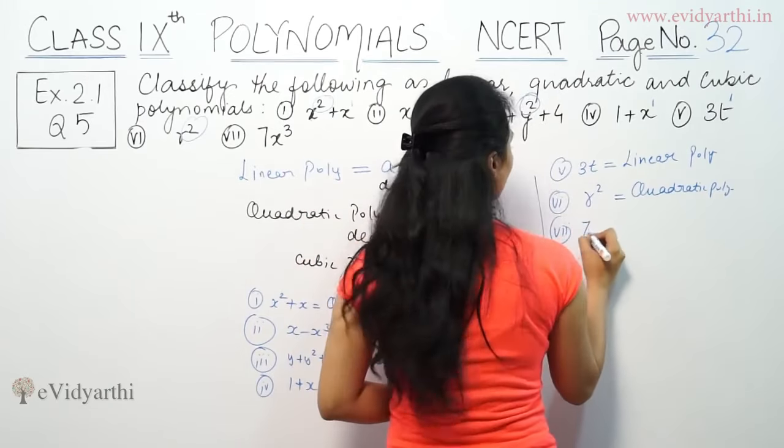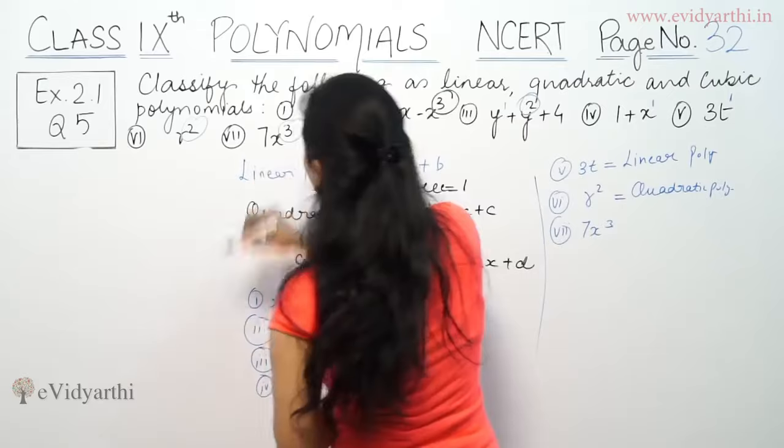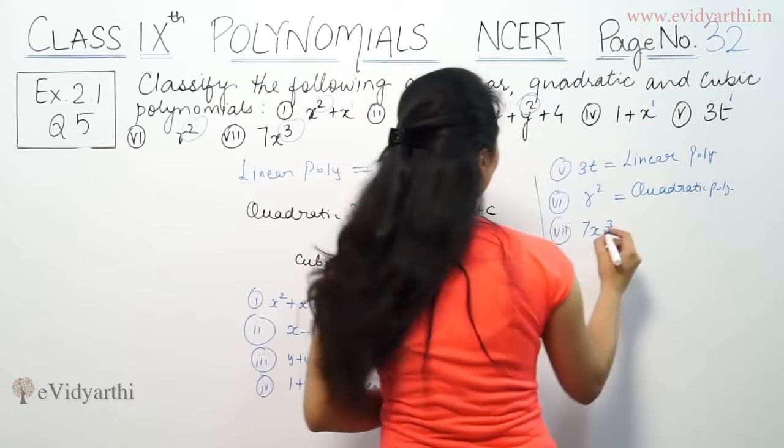Next part is 7x³. Highest power is 3. So this is a cubic polynomial, because degree is 3.